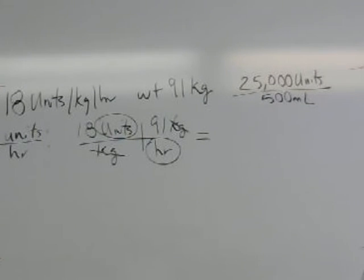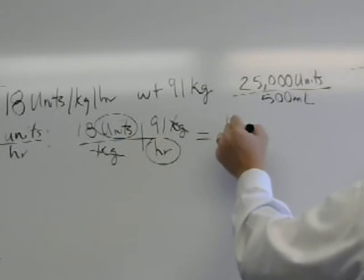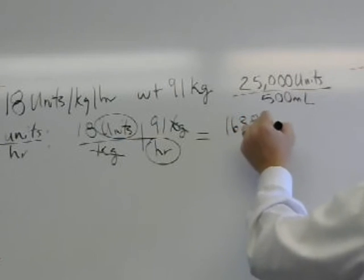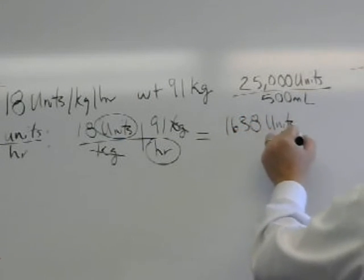And then I cross that out and cross that out, and then that gives me my numbers of units. And in this example then it ends up with 1638 units per hour.